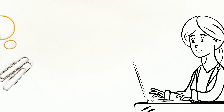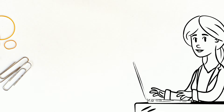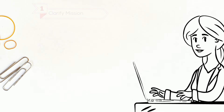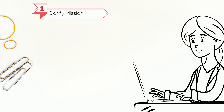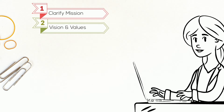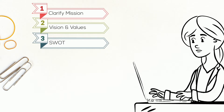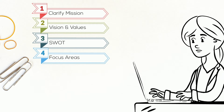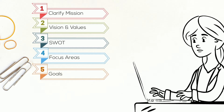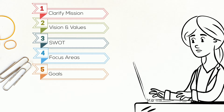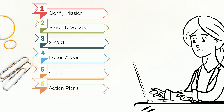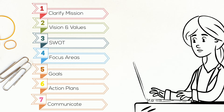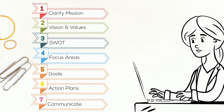So, what are the steps in strategic planning? Clarify the mission. Prepare vision and values. Conduct a SWOT. Identify four to six key focus areas. Develop strategic goals. Create action plans. Communicate and monitor results. And then adjust as necessary.